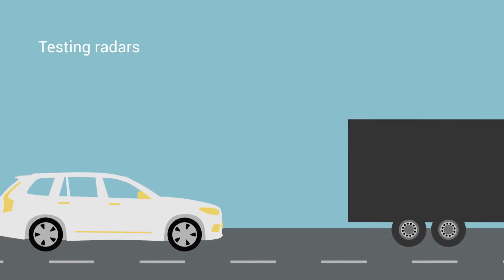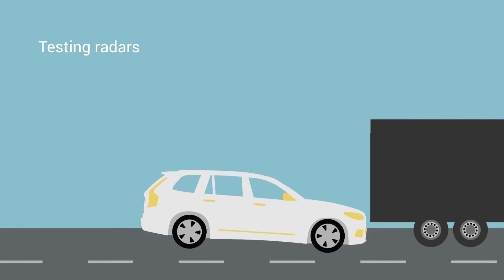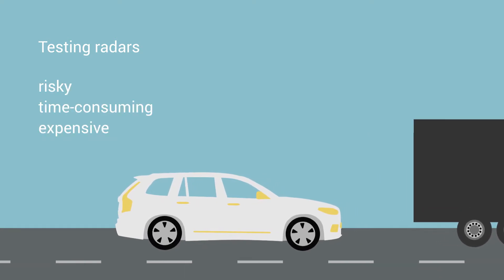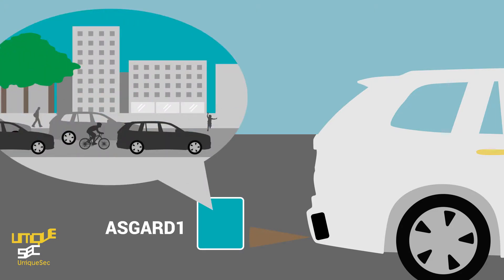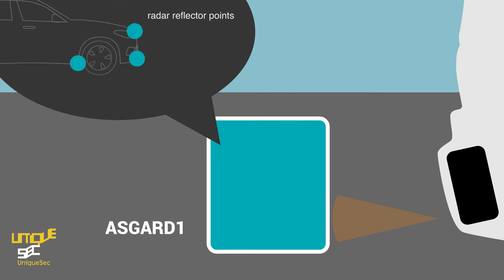However, testing the radar on a car in real traffic and public spaces is risky, time-consuming and expensive. The ASGARD system simulates traffic situations for radars on a stationary car. ASGARD creates a three-dimensional virtual world and translates it into radar reflector points.